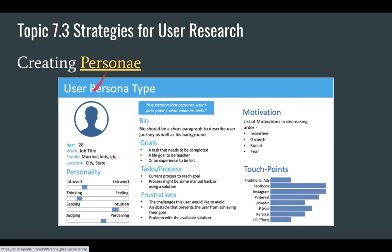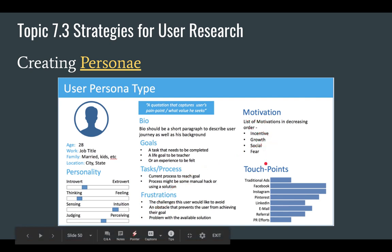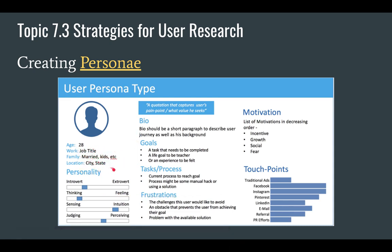When creating personas, you want to write a short paragraph that describes the user. Think about the goals that need to be completed — life goals or experience — the tasks, what needs to be accomplished and the current process to reach that goal. Include frustrations someone might have, their motivations, how old they are, their job title, their family situation, where they live. All of these things have an effect on the user research you do. If you're trying to create a product that fulfills a niche in the market — somewhere a product is needed but maybe there isn't one — you want to understand who the users are so you can target them in your user research and later for your marketing.